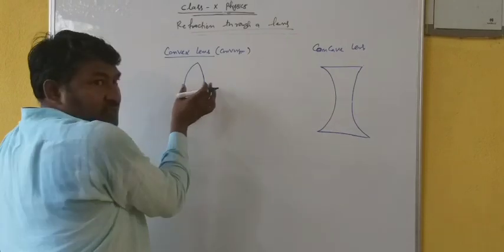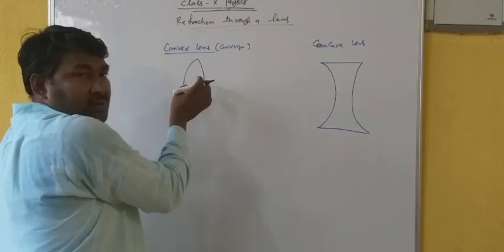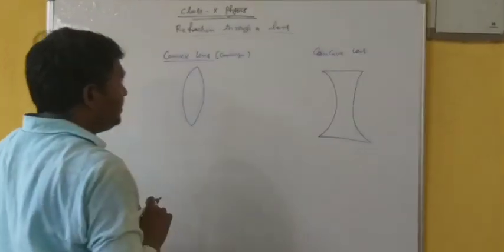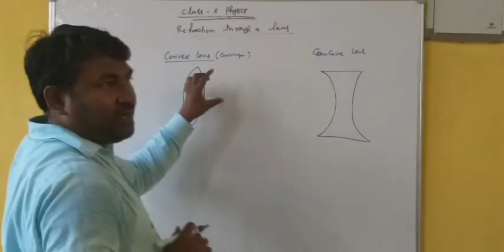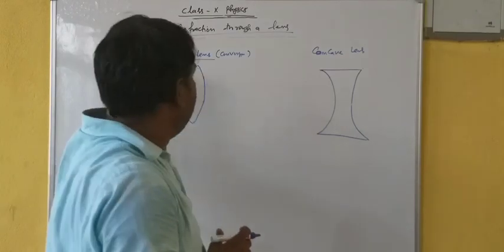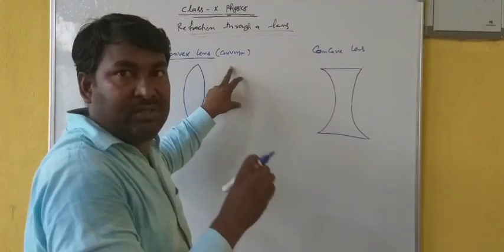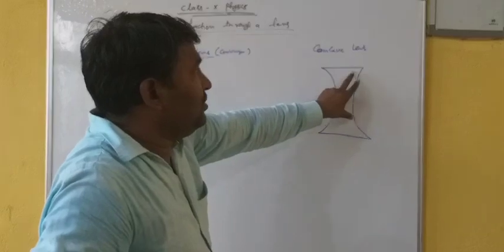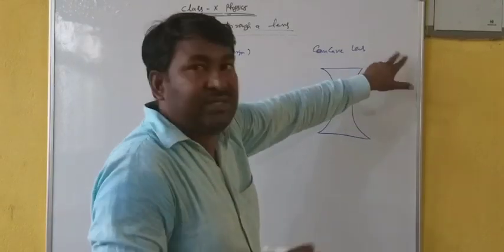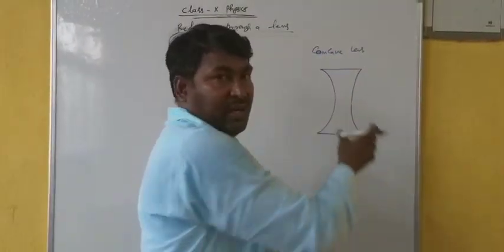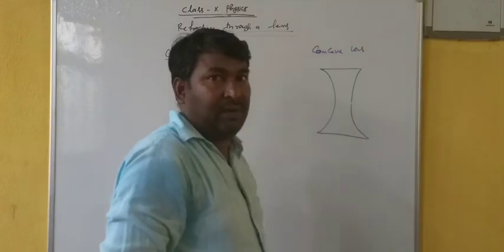The convex lens is bulging in the middle. This is also known as a converging lens, since after refraction the beams — the refracted beams — are going to meet together at a point. While the concave lens is a diverging lens, since the rays are spreading out after refraction. Later I will explain this by ray diagram.